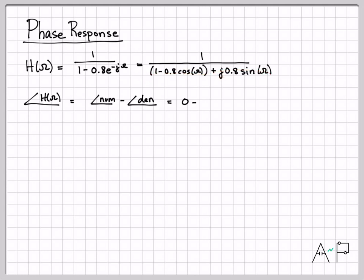Let me go ahead and break the frequency response down into real and imaginary components on the denominator, just like we did on the last slide. In terms of the angle of the numerator, 1 is a real valued number. It doesn't have an angle. So the angle of the numerator is, in fact, 0.